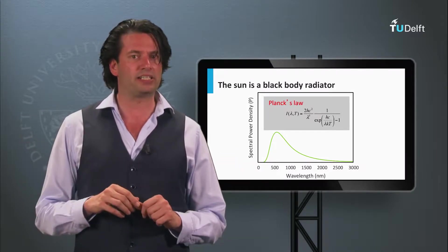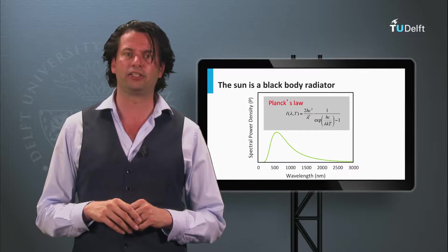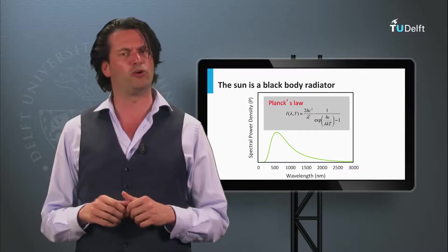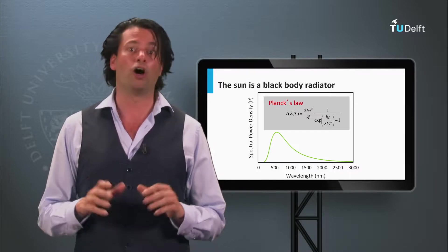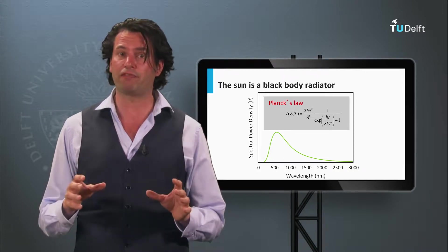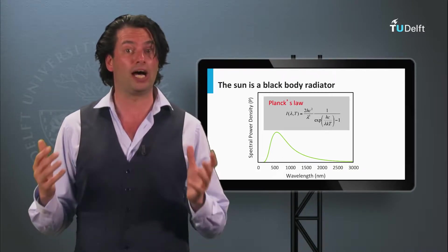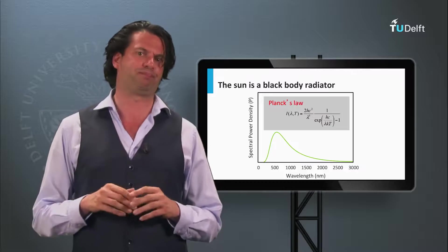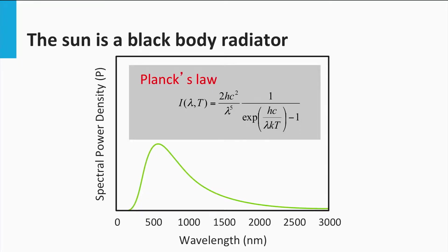All matter emits electromagnetic radiation when its temperature is above absolute zero. A body which is not reflective and absorbs all light is called a black body. The spectral power density of a black body radiator which is in thermal equilibrium is given by Planck's law. This law shows that the spectrum peaks at a certain wavelength when the object is at a certain temperature.